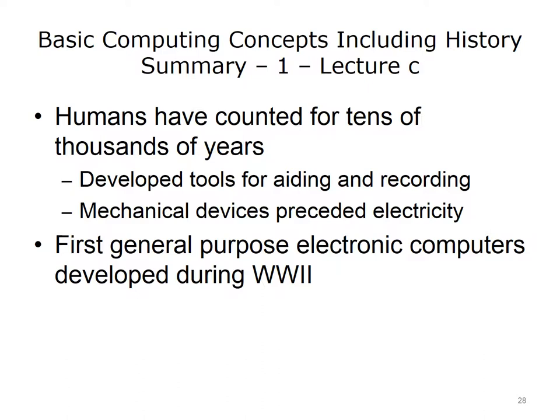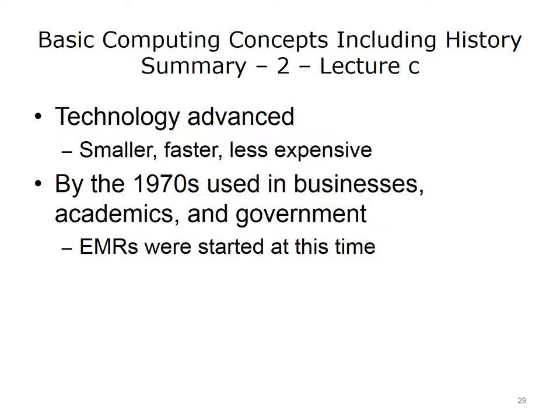In summary, humans have counted and calculated for tens of thousands of years, even before number systems were invented. Humans developed tools to help with counting and recording results — examples include tally sticks and the abacus. As early as the 16th century, mechanical computers were developed for simple calculations. By the late 19th century, there were electronic computers for specific tasks such as counting for the census. It wasn't until World War II that general-purpose computers were developed. After the war, these large, expensive computers were used in government and businesses. Over the next several decades, technology advanced so computers became smaller, faster, and less expensive. By the 1970s, computers were widely used in business, academic institutions, and government, and it was at this time that the first electronic medical records were developed.